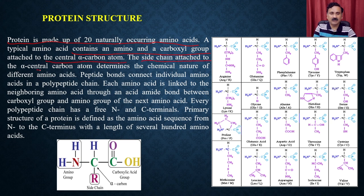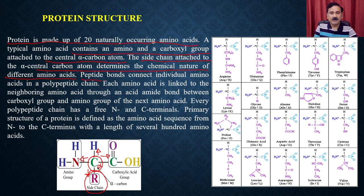The side chain attached to the central alpha carbon determines the chemical nature of the different amino acids. The C-alpha carbon is attached to four different types of functional groups, and depending on the R side chains you can have 20 different types of amino acids. The peptide bond connects two individual amino acids, giving the polypeptide chain. Each amino acid is linked to the neighboring amino acid through an acid amide bond between the carboxyl group and the amino group of the next amino acid.